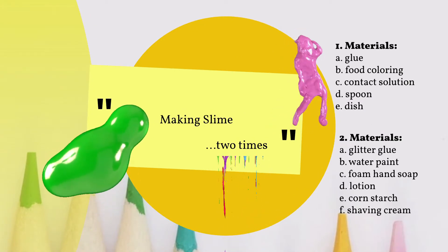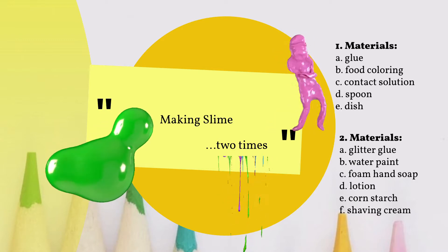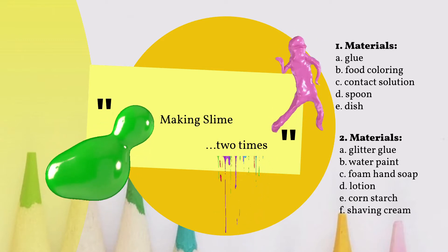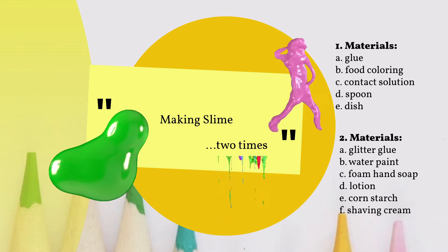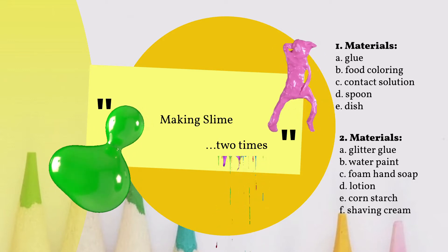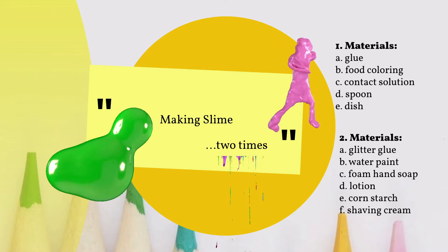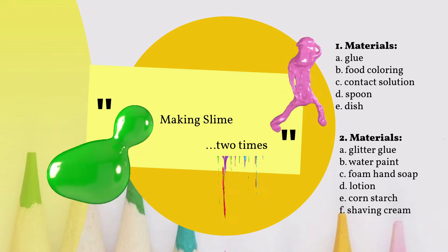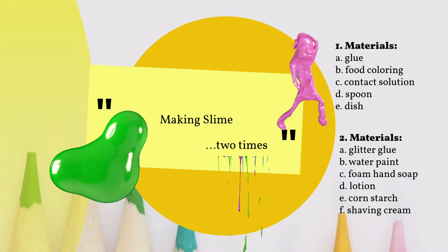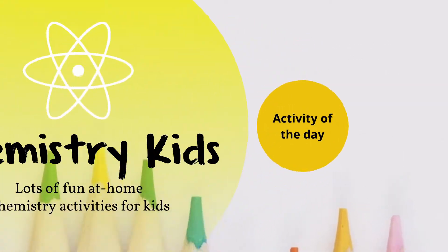For our first slime the materials needed are glue, food coloring, contact or saline solution, spoon and dish. For our second slime we will need glitter glue, water or acrylic paint, foam hand soap, lotion, cornstarch and shaving cream.